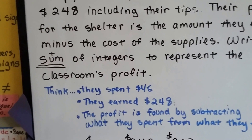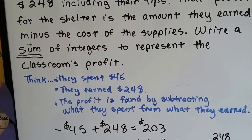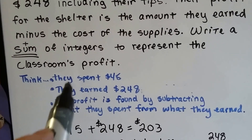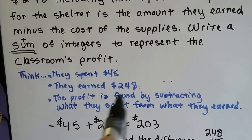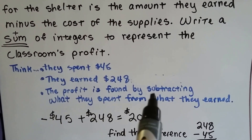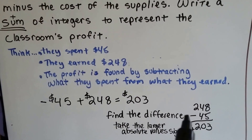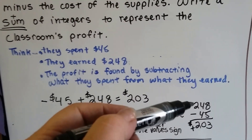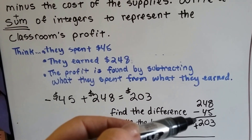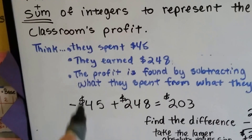The only way to add them is to make the $45 a negative. So we're adding a negative plus a positive: they spent $45 and earned $248. The profit is found by subtracting what they spent from what they earned. Since they spent $45, we take it away from $248, which gives us $203.